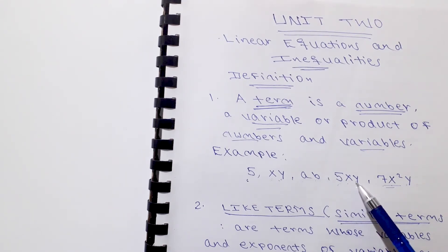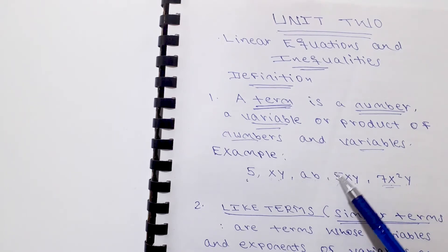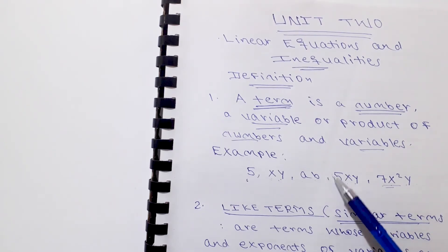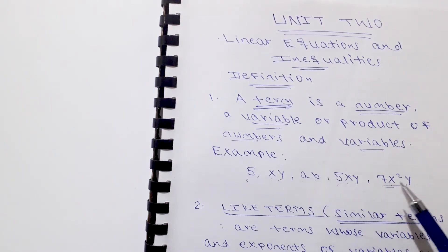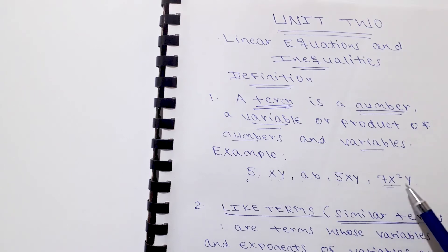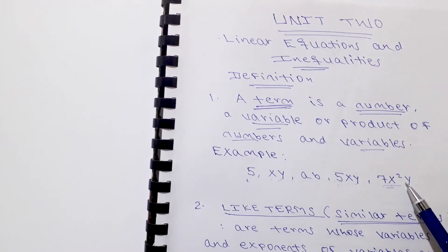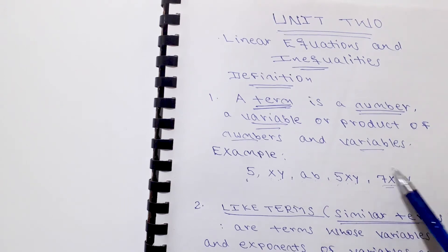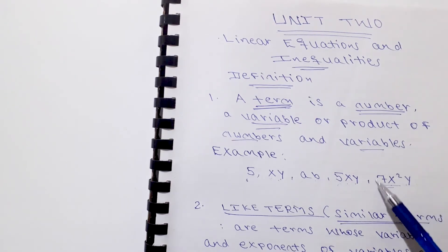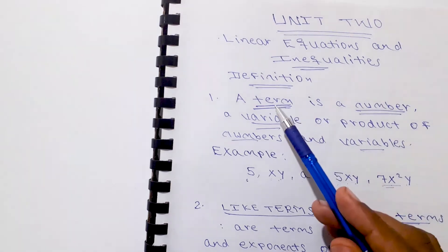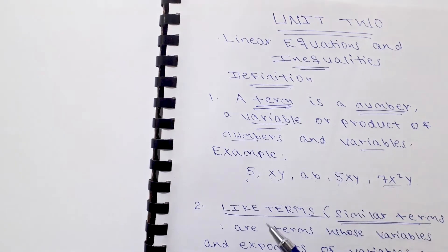For example, x squared times y — here x squared times y: x squared is a number part, y is a variable. So the product of numbers and variables is a term.